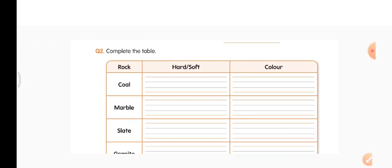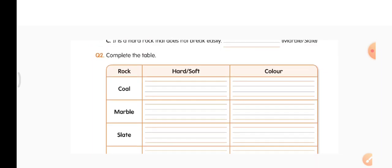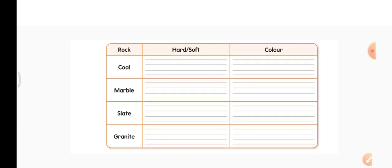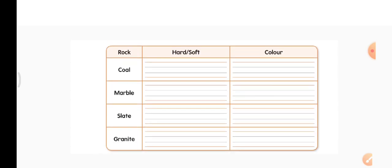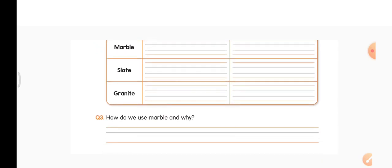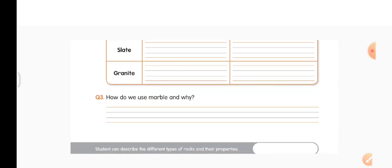Now complete the table. We have a table here, we need to fill it up. They gave us the names of different types of rocks: coal, marble, slate, granite. You have to write whether the particular rock is hard or soft and which color it is. Coal is soft, color black. Marble is hard, color white. Slate is soft, color gray and black. Granite is hard, color gray, also available in black and other colors. Question 3: How do we use marble and why? We use marble to make the floors and also for buildings and to make statues. Why? Because it is white in color, it looks good, and also it is a hard rock.